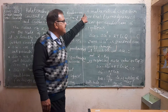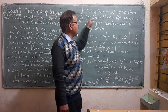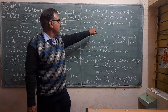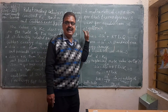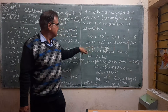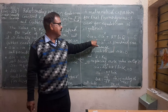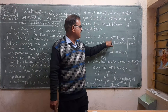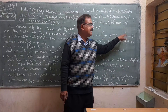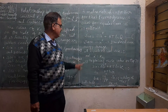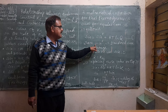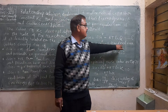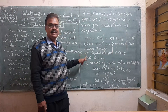A mathematical expression for this thermodynamic view of equilibrium is as follows: delta G is equal to delta G naught plus RT ln Q. This is equation 1, where delta G naught is the standard free energy change.